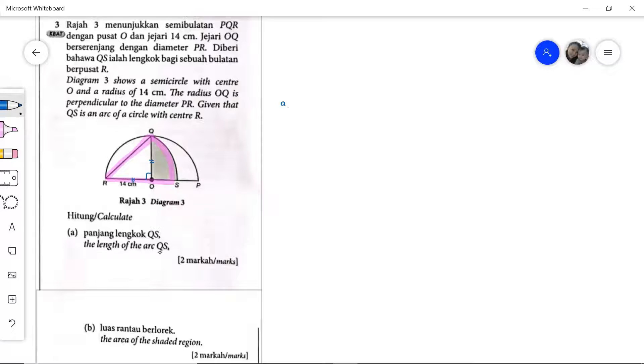Now we've got to find the arc QS. How do we find the arc QS? The arc QS equals R theta. We need to find the R, the radius, which is QR, and then the angle, which is here. So how do we find it?